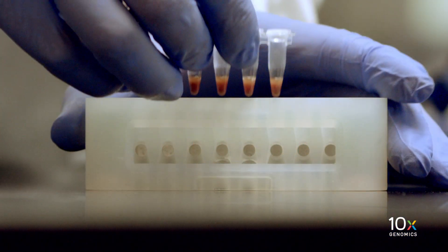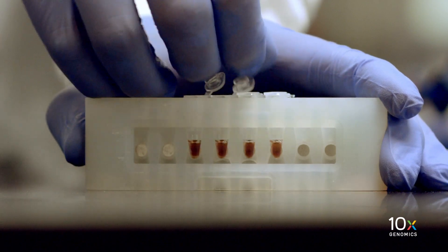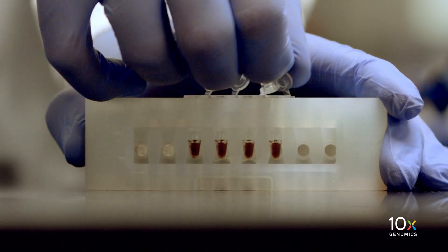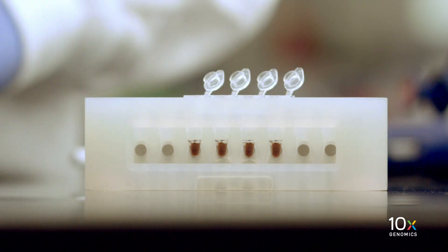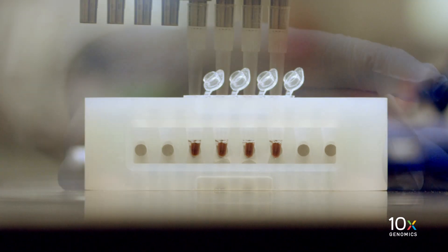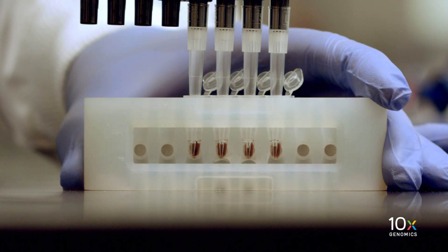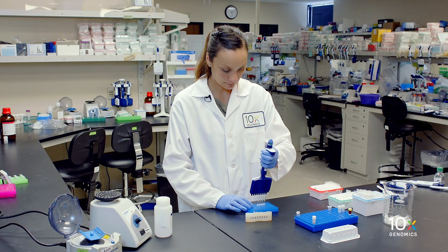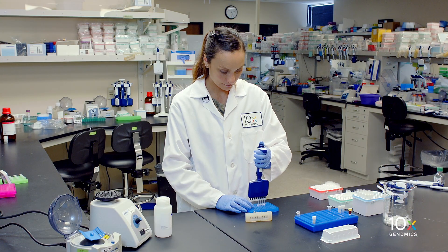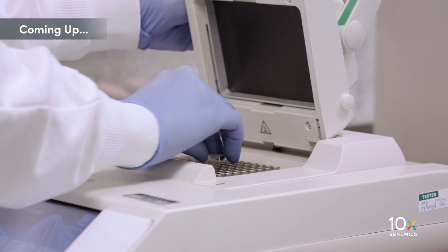Place the tube strip in a 10x magnetic separator in the low position until the solution clears. Transfer 35 µL of purified GemRT product to a new tube strip. We've completed our post-GemRT DynaBead cleanup. Next, we'll proceed with the cDNA amplification step.